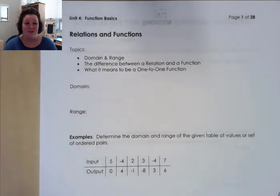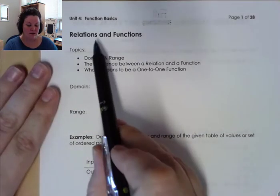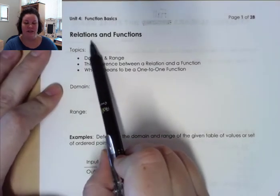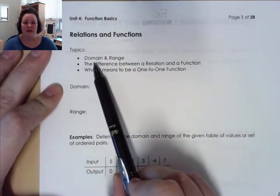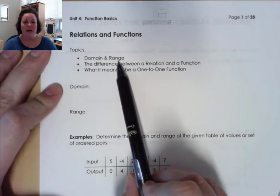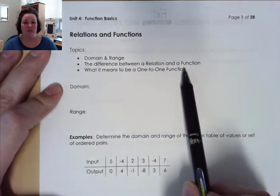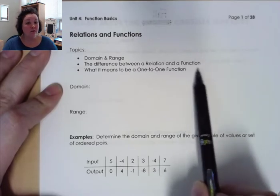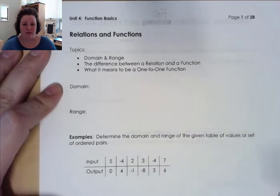Let's go ahead and move on to unit four now, which is all about the basics of functions. We're going to get started with the section titled Relations and Functions. We're going to look at what domain and range is, the difference between a relation and a function, and if things are functions, then we're going to look at what it means to be a one-to-one function.